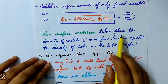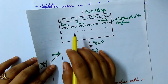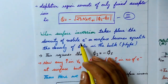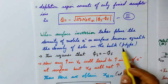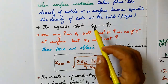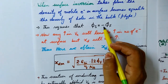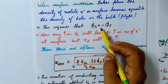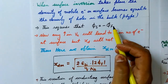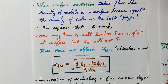When surface inversion takes place, the density of mobile electrons at the surface becomes equal to the density of holes in the bulk, that is in the p-type substrate. At this point the condition required is that the surface potential φs becomes equal in magnitude to the Fermi potential of the bulk but with reverse polarity due to the electrons. So φs becomes equal to minus φf. This is the condition at the onset of surface inversion.